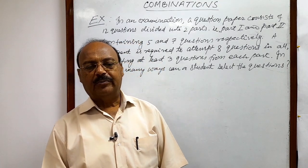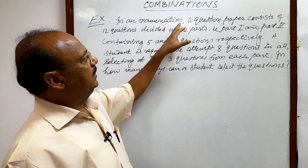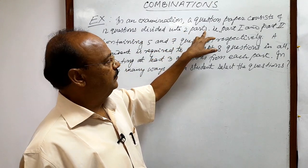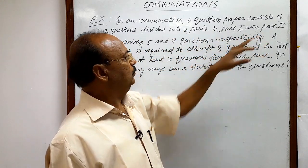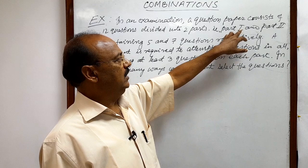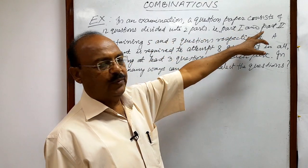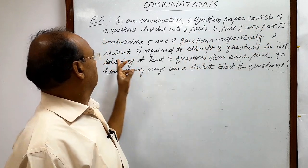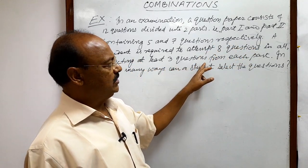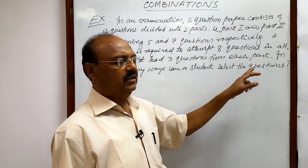Here we will see a question from the topic permutations. The question is very interesting. So first of all let us discuss the question. In an examination, a question paper consists of 12 questions divided into two parts — Part 1 and Part 2 — containing 5 and 7 questions respectively. A student is required to attempt 8 questions in all, selecting at least 3 questions from each part. In how many ways can a student select the questions?